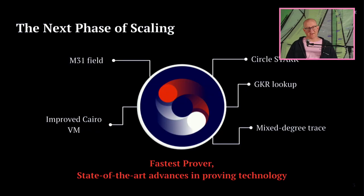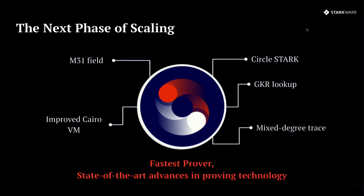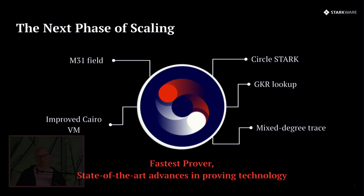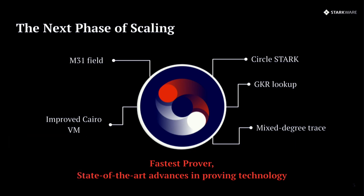Yesterday, we released the next phase in scaling and validity proof technology. It is Stu based on the Mersenne 31-bit field with an improved Cairo virtual machine based on the mathematical breakthrough of Circle Stark that was published just last week, joint work by Polygon Zero and Starkware. It's going to use GKR lookup and mixed degree trace and a lot of other bells and whistles, making it yet again, a pretty darn good prover.